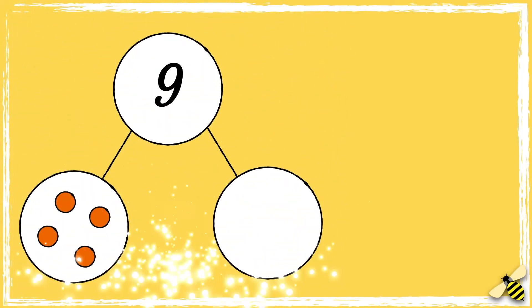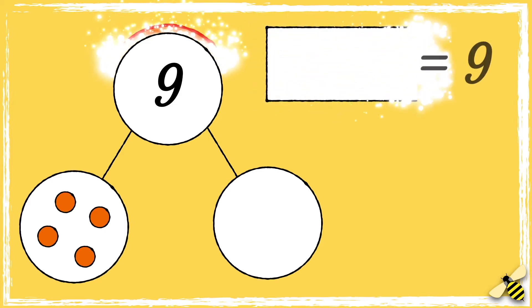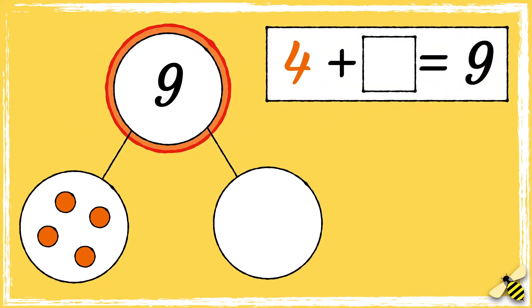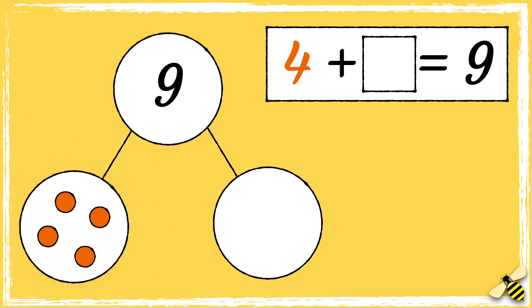Let's look at one more example. Here is a part-whole model. We know that nine is the whole but we don't have all the parts. We can work out the missing part by counting on from four until we get to nine.